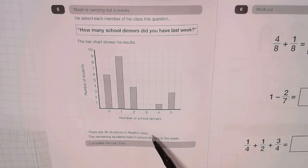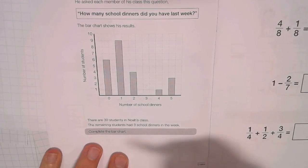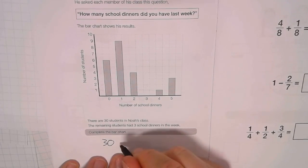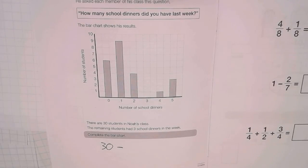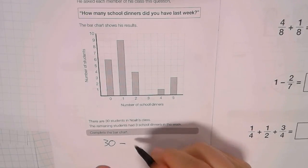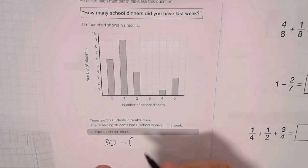Now, it says there are 30 students. And you guys all knew what to do here. You've got all of them, and then I've got to take away all the ones that I've got so far to find out how many must have had 3 school dinners.